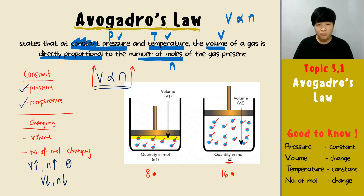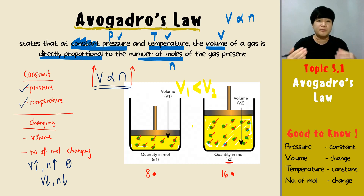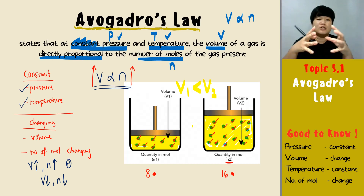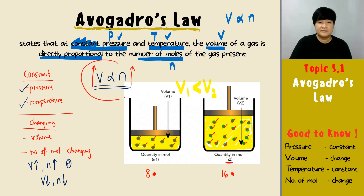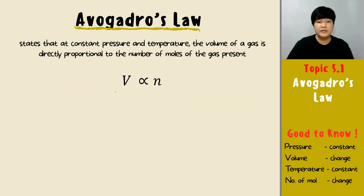When the number of molecules increases, the volume must also increase. You can see that V1 is smaller than V2 — the space the gas particles take up in V2 is much bigger. This is a very simple concept, just like blowing a balloon: the more you blow, the bigger the balloon, because you are adding moles of gas.